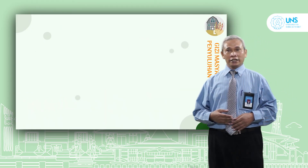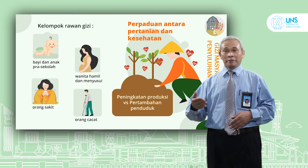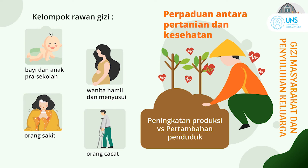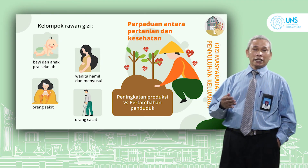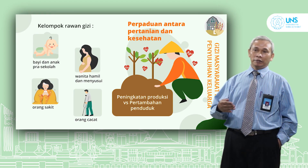Kemudian gizi masyarakat dan sumber daya keluarga. Ini menjadi bagian yang penting, bahwa tidak hanya bidang pertanian tetapi juga menyangkut kesehatan, bagaimana supaya produksi yang kita hasilkan bisa mengimbangi pertambahan penduduk sehingga kecukupan dan keamanan pangan bisa terjamin. Banyak kelompok rawan gizi seperti bayi dan anak prasekolah, wanita hamil dan menyusui, penderita sakit, dan penderita cacat yang mudah mengalami gangguan gizi. Masalah gizi bukan hanya kekurangan gizi tapi juga kelebihan gizi, dan peran pertanian di sini menjadi penting supaya ketersediaan dan keamanan pangan terjaga.